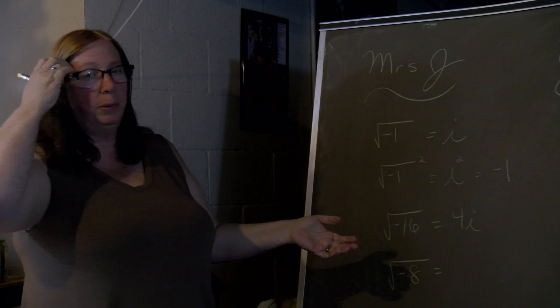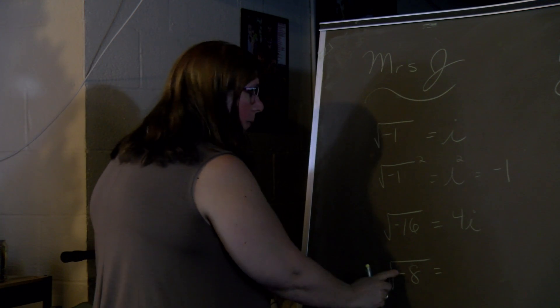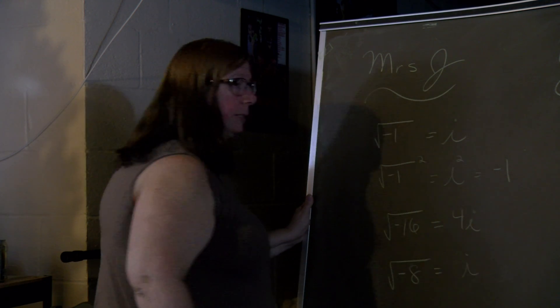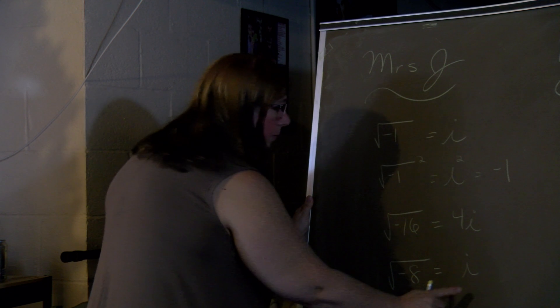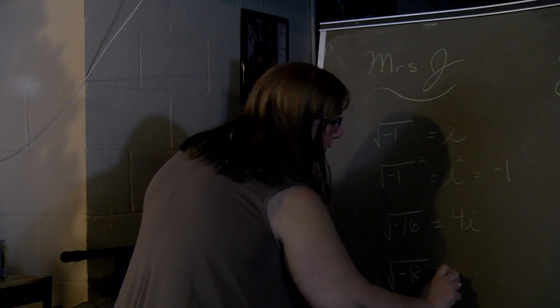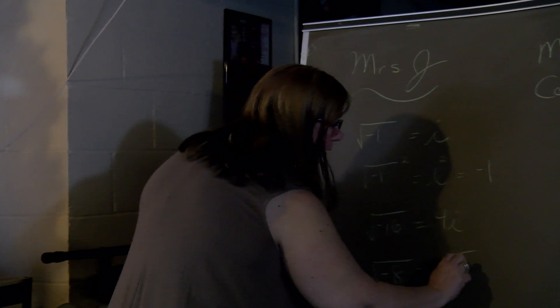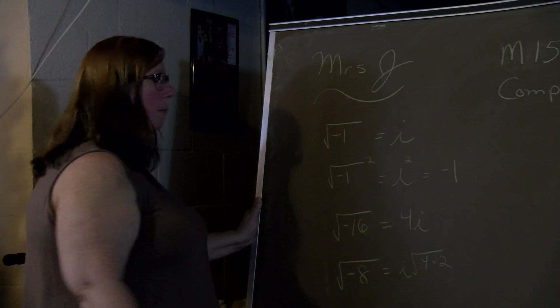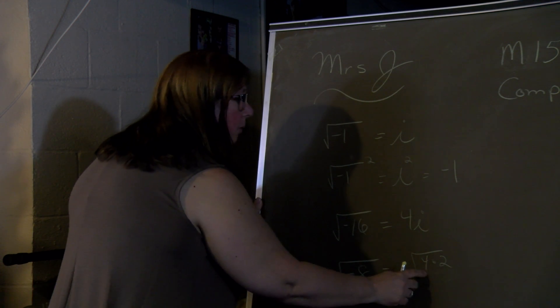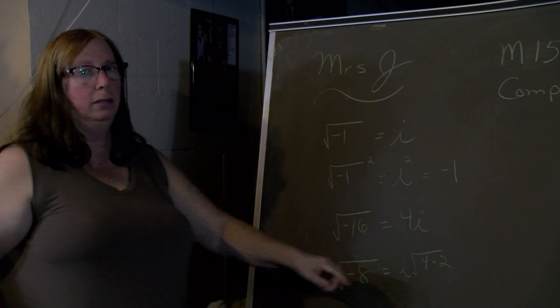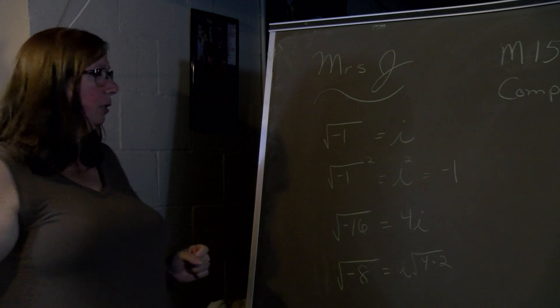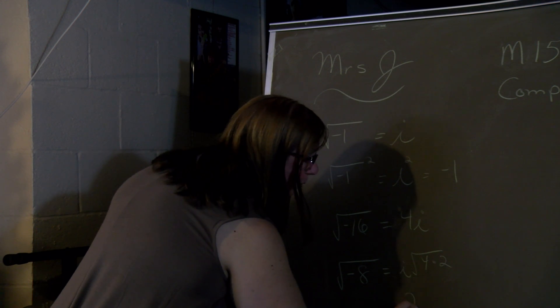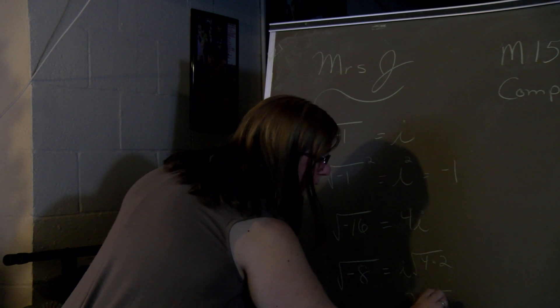It's not always a perfect square root. In this case, the i comes out, or the negative becomes the i, but 8 is 4 times 2. And the square root of 4 is 2. So you can break it up this way. You can use a factor tree. It's up to you how you like to reduce your radicals. But the square root of 4 would be 2i radical 2.